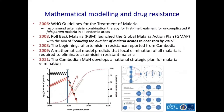In 2006, WHO recommended artemisinin combination therapy in all endemic areas globally. In 2008, the Rollback Malaria programme launched with the Global Malaria Action Plan, aiming for national malaria elimination in many countries. That very same year, the beginnings of artemisinin resistance were reported in Cambodia — so one of the major tools for achieving elimination was already starting to be lost.